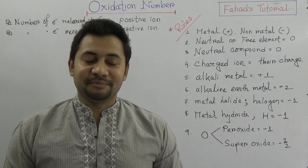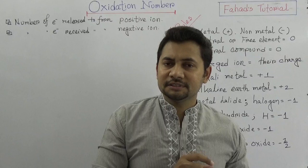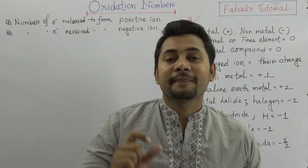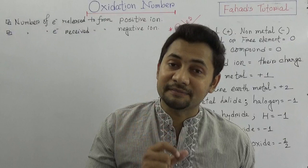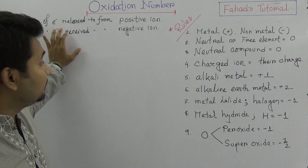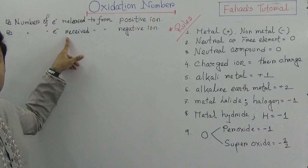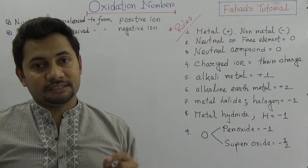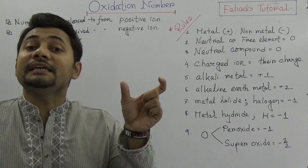Let's study about oxidation number. So what is oxidation number? Think about that at the time of the formation of compounds, some elements release electrons to form positive ions and some elements accept or receive electrons to form negative ions. That number of electrons of that element is known as oxidation number.